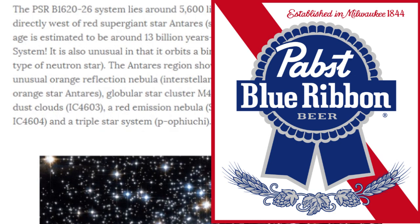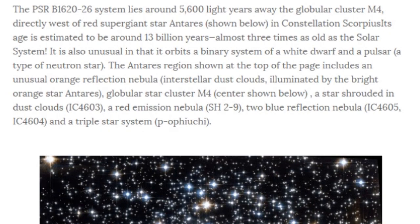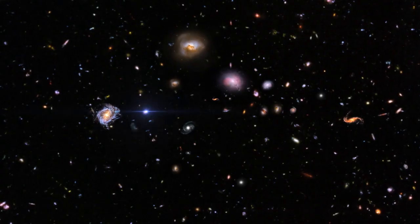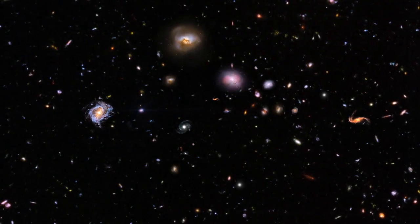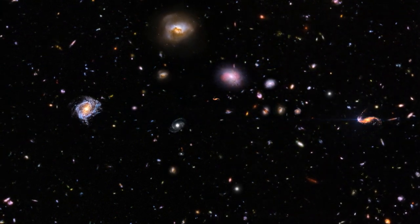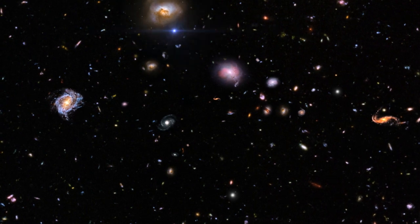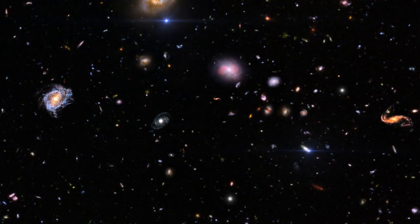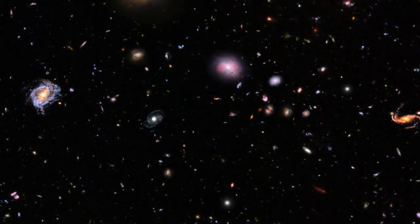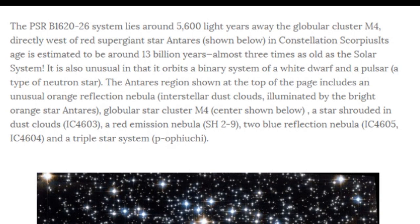The Paps Blue Ribbon B1620-26 system lies about 5600 light years away, the globular cluster M4. I don't know, bad grammar, science boy. Directly west of the red supergiant star Antares. If you're watching Antares at night, he's been freaking out. Him and Sirius, it's like they're doing some sky dance or something in constellation Scorpius.